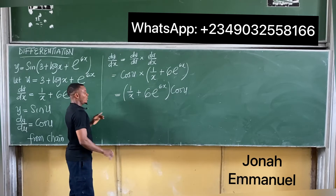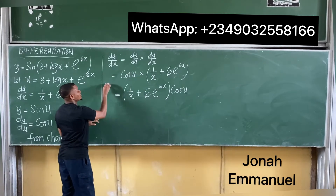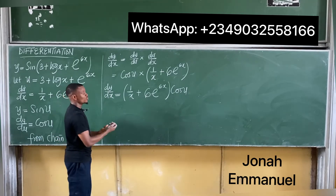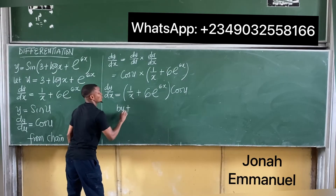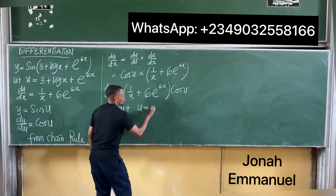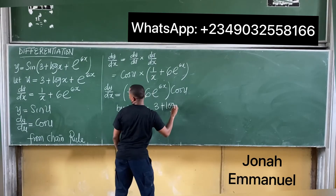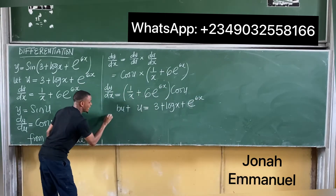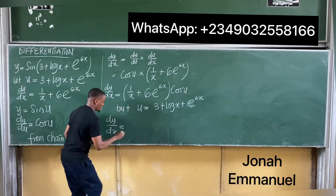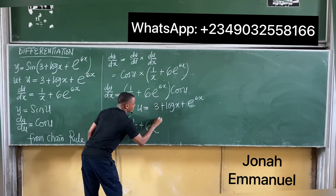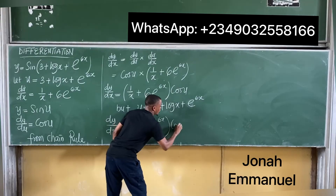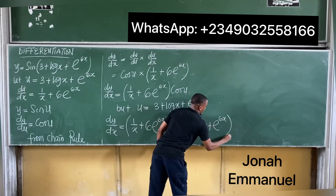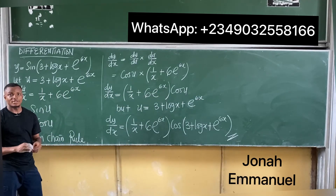I can't leave the answer in terms of u, since I'm finding dy/dx — the answer must be in terms of x. So I substitute back: u = 3 + log x + e^(6x). Hence dy/dx = (1/x + 6e^(6x)) × cos(3 + log x + e^(6x)). That's your answer.